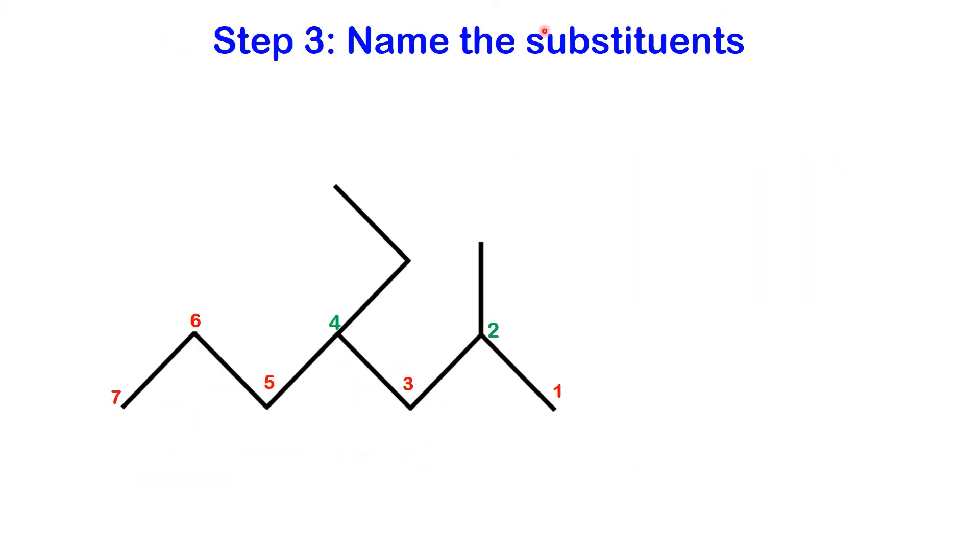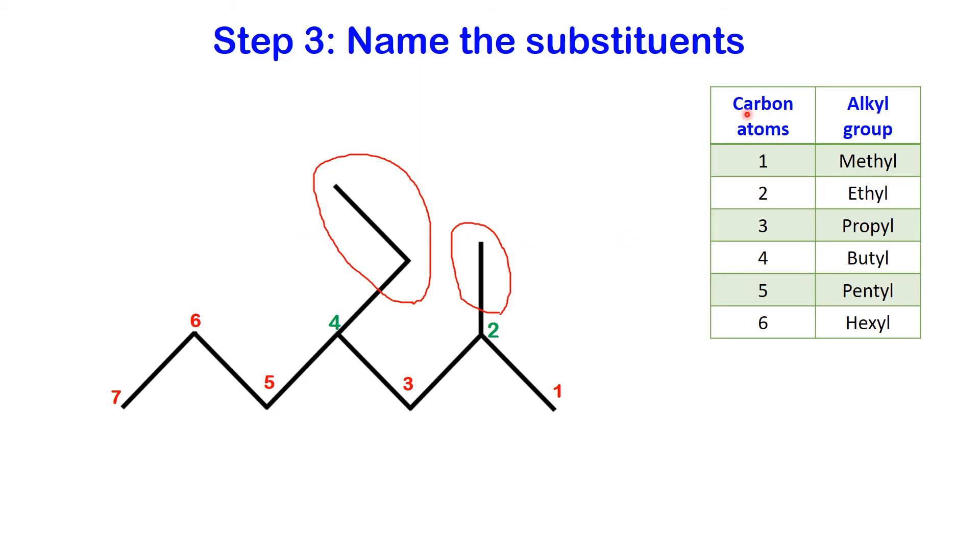Step three: name the substituent. Let's revisit the previous example where we've already selected the longest carbon chain and assigned numbers to it. In this molecule we have two substituents, typically called alkyl groups. The name of an alkyl group is generally based on the number of carbon atoms it contains.